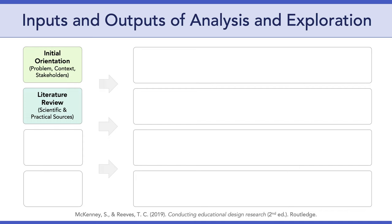When approaching the literature review, it's useful to assume that the problem you've identified has already been experienced by another researcher — and that's not necessarily a bad thing. Lean on that previous work in ways that can strengthen your own design-based research. The third input is the field-based investigation. McKinney and Reeves place a lot of emphasis on this stage, presenting it as a mini-study, a micro-cycle in and of itself. In our situation with the pandemic and a short summer semester, it's not realistic for us to do this, so we'll largely be skipping over it.